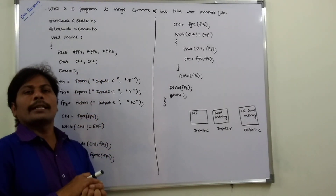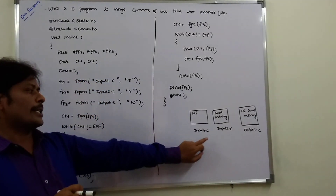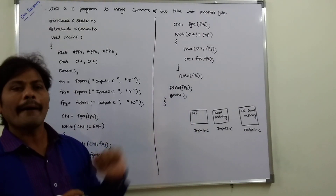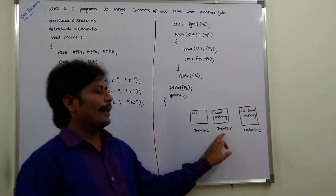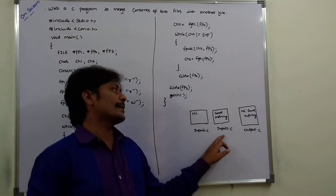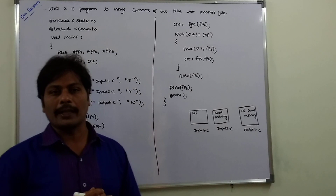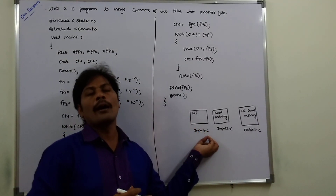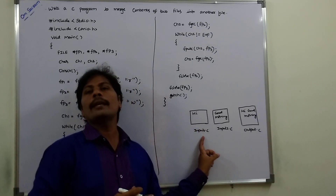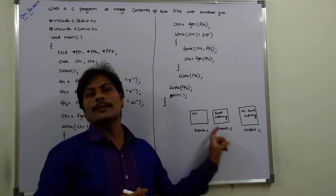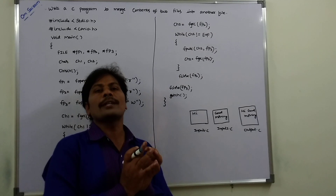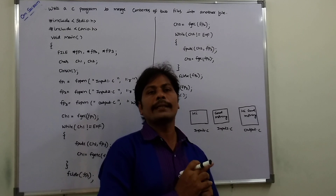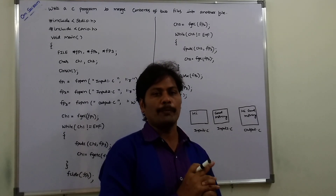We take two files: first file is input1.c which contains the information 'Hi', and second file input2.c contains 'Good Morning'. Now first we merge the contents of input1.c and input2.c, and the merged information is transferred to output.c. So output.c contains 'Hi Good Morning'.